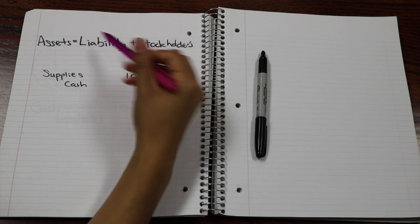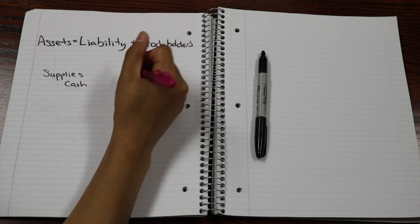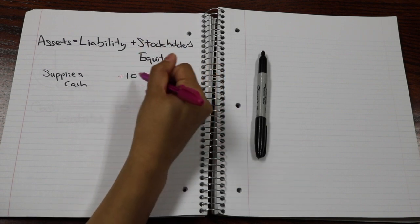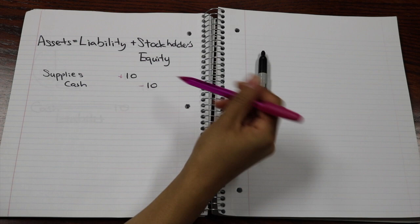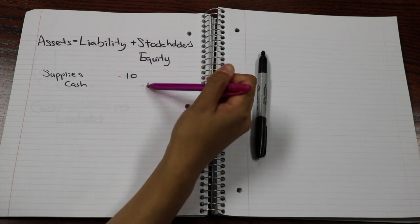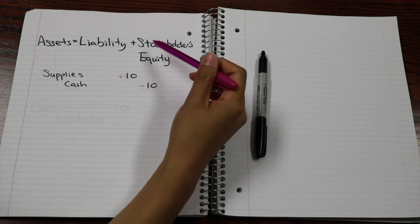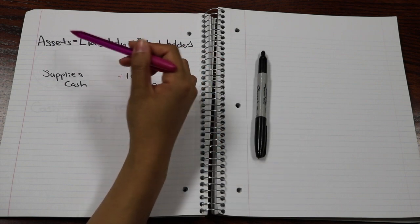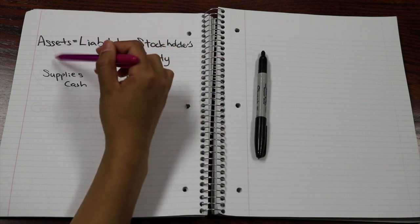But supplies, which is also an asset account, we are debiting it, so it's actually a plus. So if we look at it right now, the plus and minus on the asset side, because they're for the same amount, they cancel it out. So the net change to your asset is actually zero.